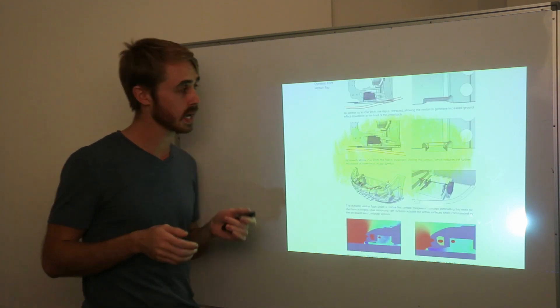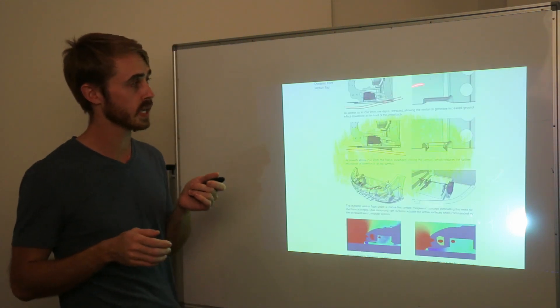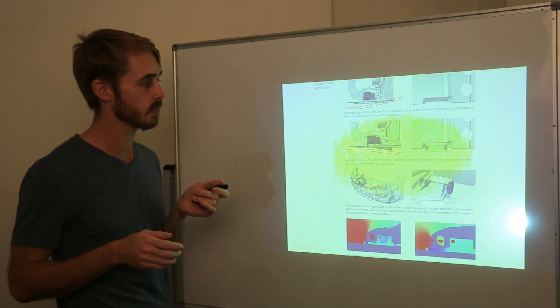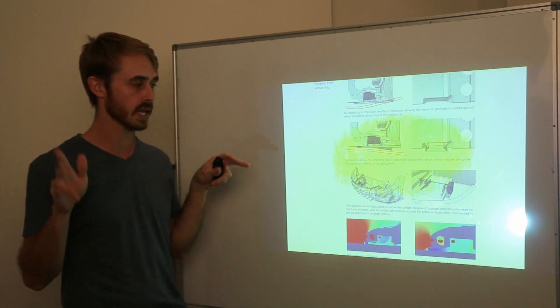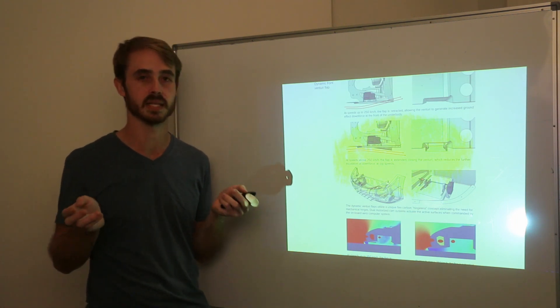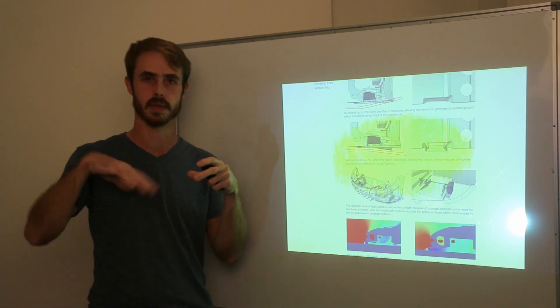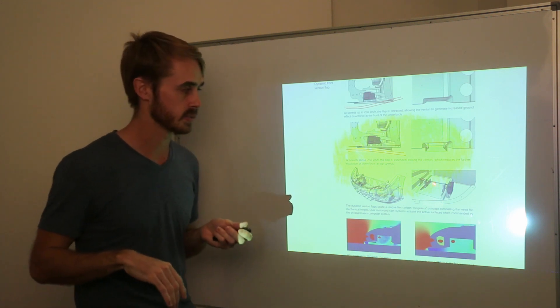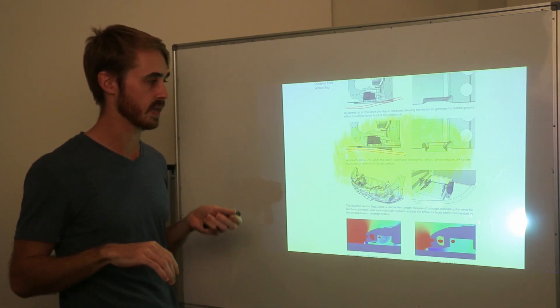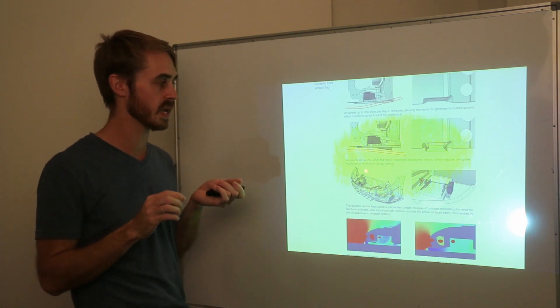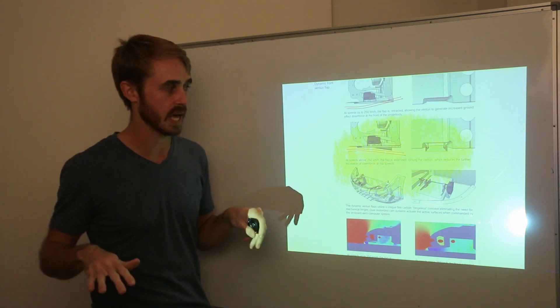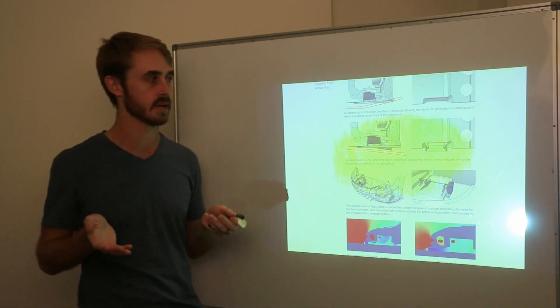Looking at the under tray, this is the dynamic under tray setup on the Koenigsegg. It runs a Venturi setup with a retractable flap. The flap's made out of what they call a hingeless design which really just means that they just took a piece of carbon and cut it and then use the flex in it and it's got some cam actuators that will push it up and down. They claim that above 250 they drop the flaps so it's not making that big downforce.